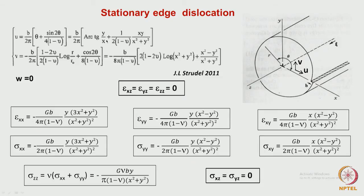The displacement u contains arctan(y/x), which takes care of the cyclic behavior. Differentiating with respect to x, y, and z: epsilon_xz, epsilon_yz, epsilon_zz are zero. Epsilon_xx turns out to be Gb/(4π(1−ν)) multiplied by y(3x² + y²)/(x² + y²)². These are algebraic derivations that can be found in any textbook — one does not have to memorize them.